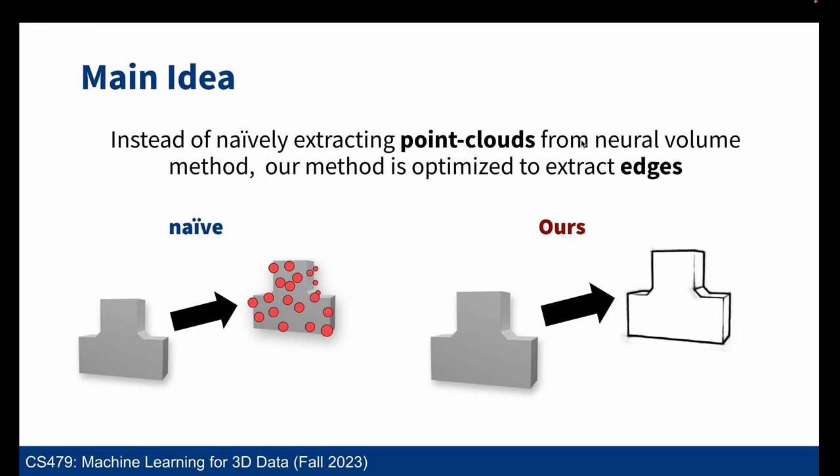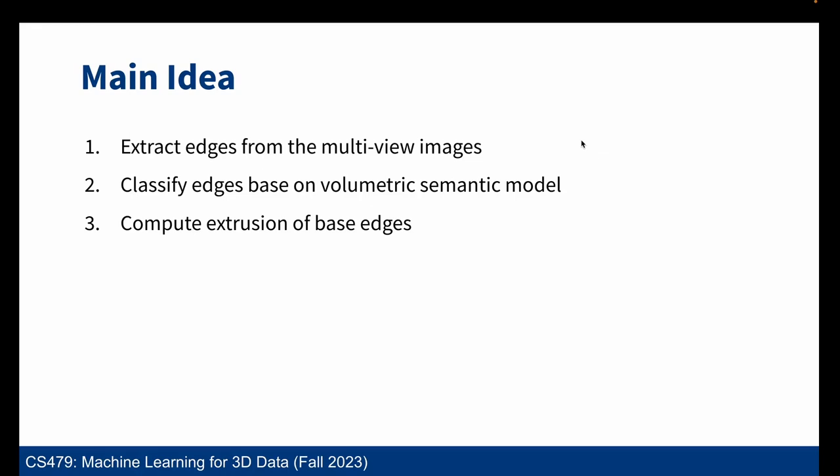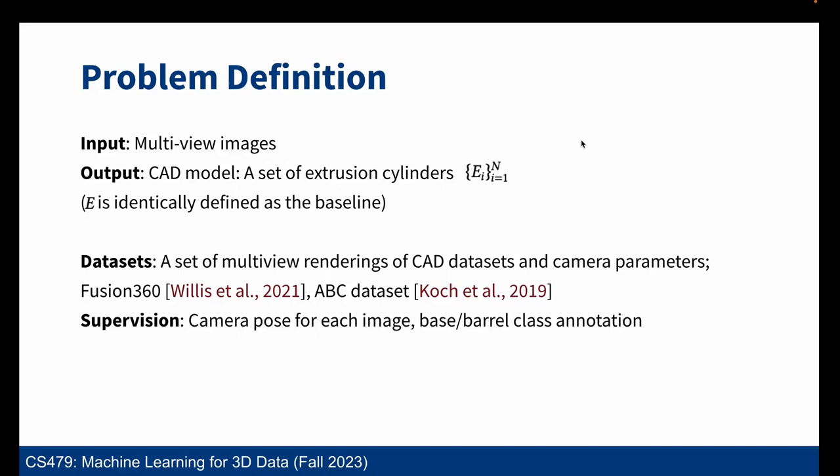In our method, we first extract edges using a neural edge field approach, and these edges can then be classified using a volumetric semantic classifier. These labeled edges can then be directly used to reconstruct extrusion parameters. We extract 50 multiview images uniformly sampled around each object, and for each view, we extract visible edge information as input to the model.